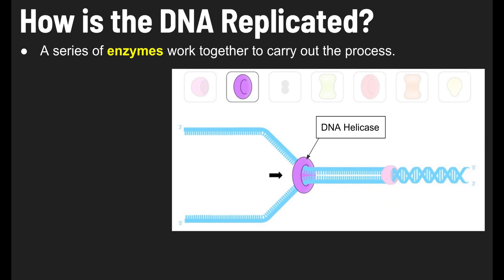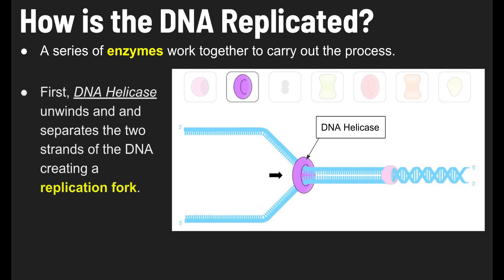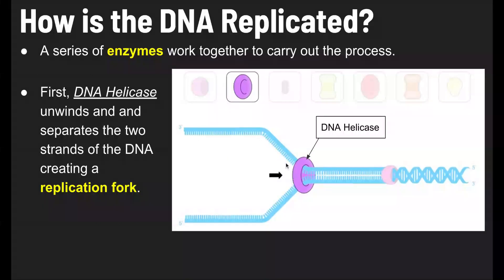Overall, big picture, there are five steps. Step one: DNA helicase unwinds and separates the two strands of the DNA, creating a replication fork. The DNA looks like a twisted ladder, and helicase untwists it and separates the two strands by creating a fork — think of a fork in the road. This is called the replication fork.